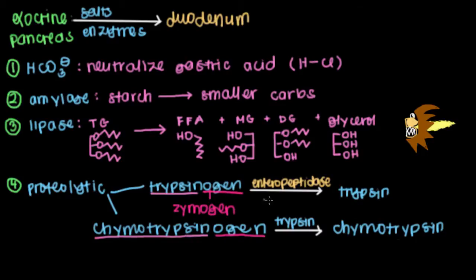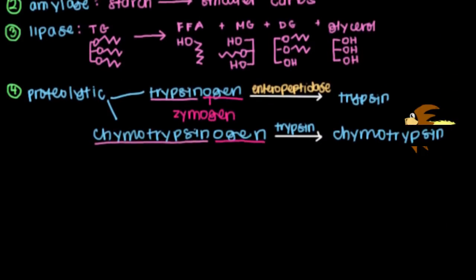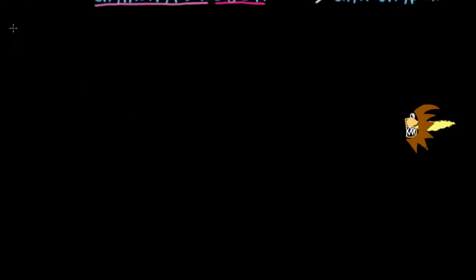And on that note, why don't we move on to the next part of the pancreas, which is known as the endocrine pancreas. This is actually the most famous part of the pancreas — we hear the most about this because it has a lot to do with diabetes.